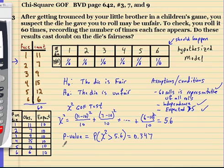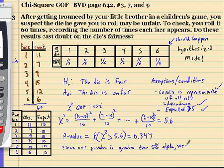So now we need to make a decision. Since our p-value is greater than, we'll use a 5% alpha, we fail to reject our H0.